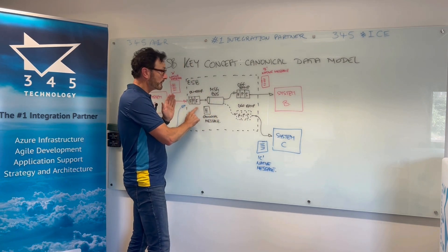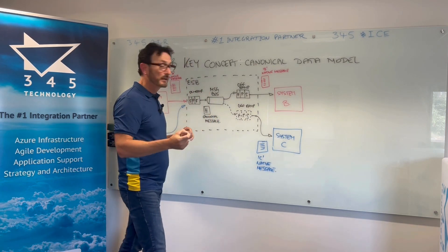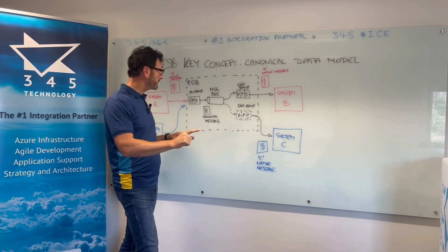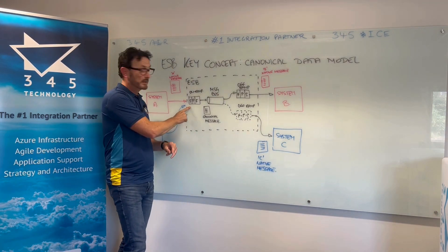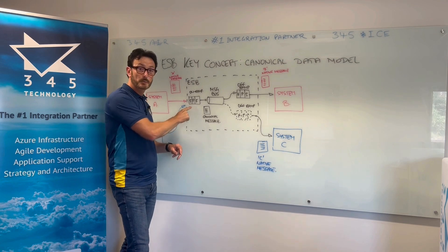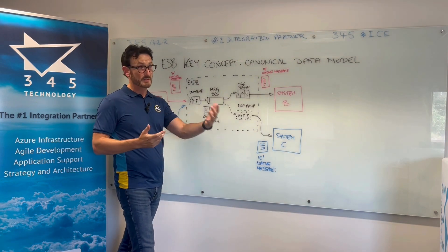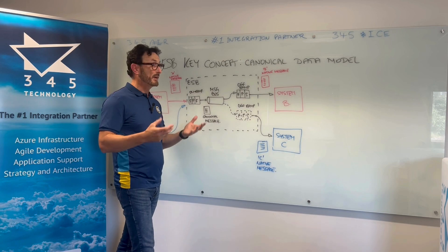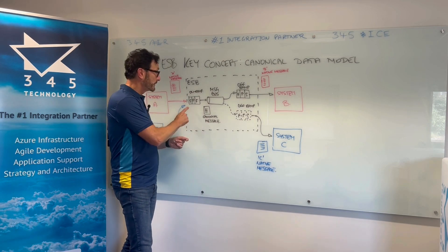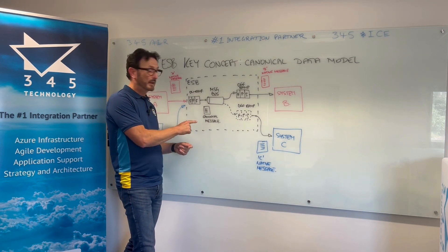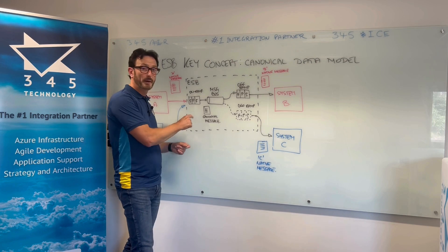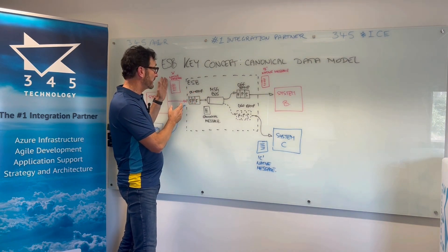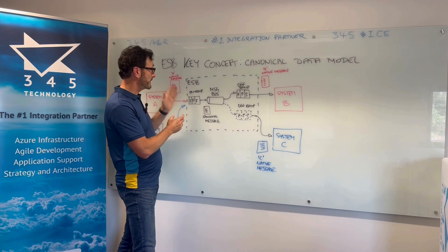On the on-ramp, the things we're typically doing — we can delve into this in far more detail another time — but you're dealing with security, you're dealing with the communication protocol, which could be HTTP, SOAP, REST, FTP, or whatever it is, and the message format. What we do on this on-ramp is translate our native message into a canonical.